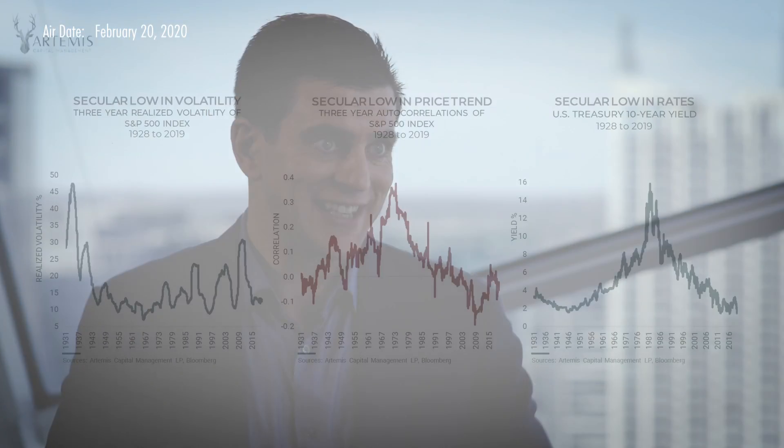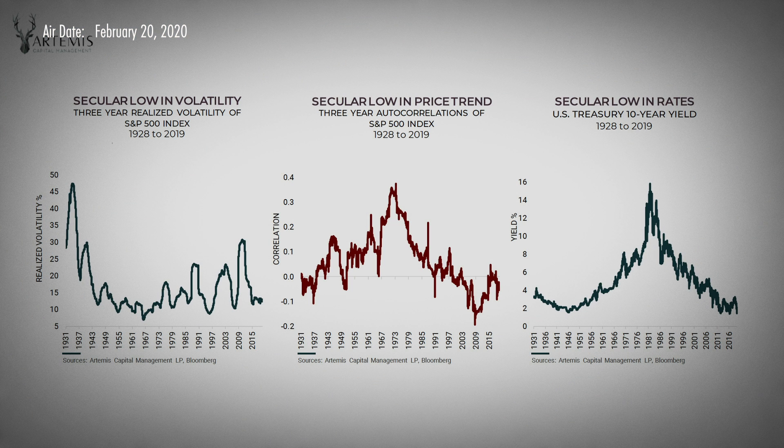And guess what has happened the last 40 years? We are at generational lows in volatility across asset classes. Asset trending — I think this is something most people don't realize — that actually, equities for example used to trend higher and lower. You can measure that through something called autocorrelation. All that means is that if today was down, it is likely that tomorrow will be up, and vice versa.